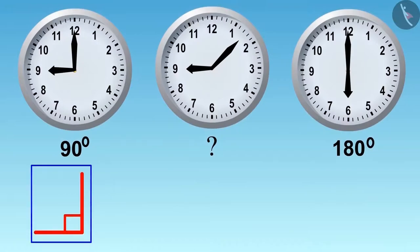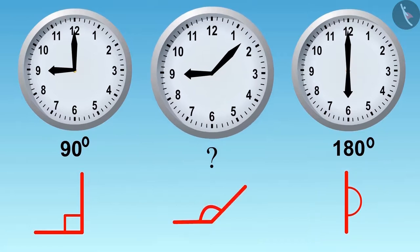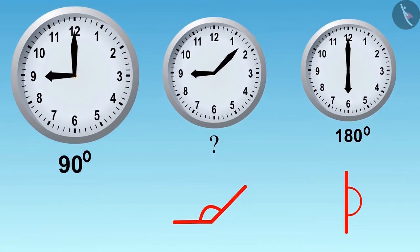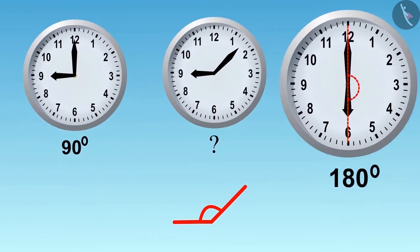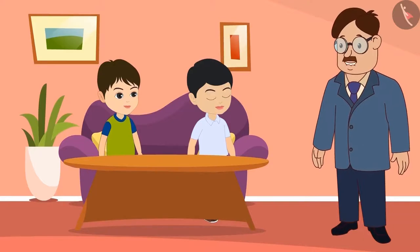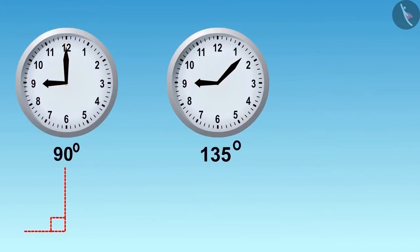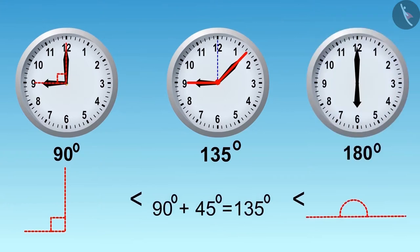Children, now you have seen angles of ninety and one eighty degrees. Can you tell how many degrees this angle makes by looking at it? Hmm. It looks like greater than ninety degrees and less than one eighty degrees. You identified it correctly, Golu. This is an angle of one hundred and thirty-five degrees. This is greater than ninety degrees but less than one hundred and eighty degrees.